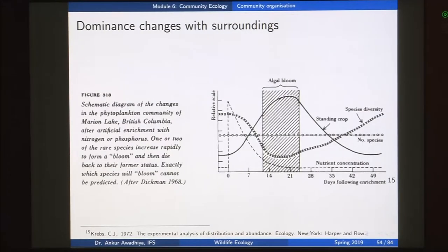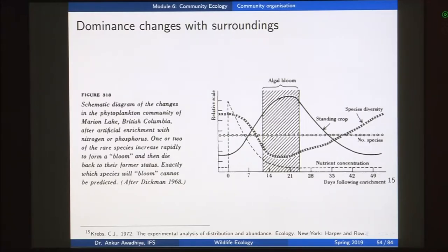Dominance also changes with the surroundings — with the biotic and abiotic conditions of the community. In this image we are looking at changes in the phytoplankton community of a lake in British Columbia after artificial enrichment with nitrogen or phosphorus. One or two of the rare species increase rapidly to form a bloom and then die back to their former status; exactly which species will bloom cannot be predicted.